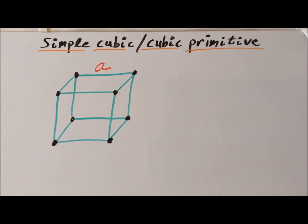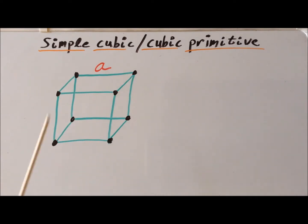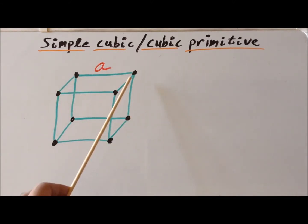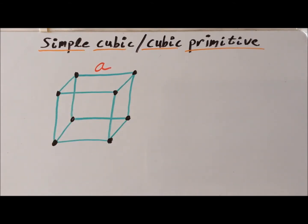Here we have a simple sketch of the simple cubic, also known as the cubic primitive crystal structure. The distance between adjacent atoms is the edge length a, and is the same for all sides because we have a perfect cube. In the x, y, and z directions, the translation is always a, and all the relevant angles are right angles. The simple, or primitive, part means that each of the atoms are at the vertices, but none are on the faces and none are in the center of the crystal structure.